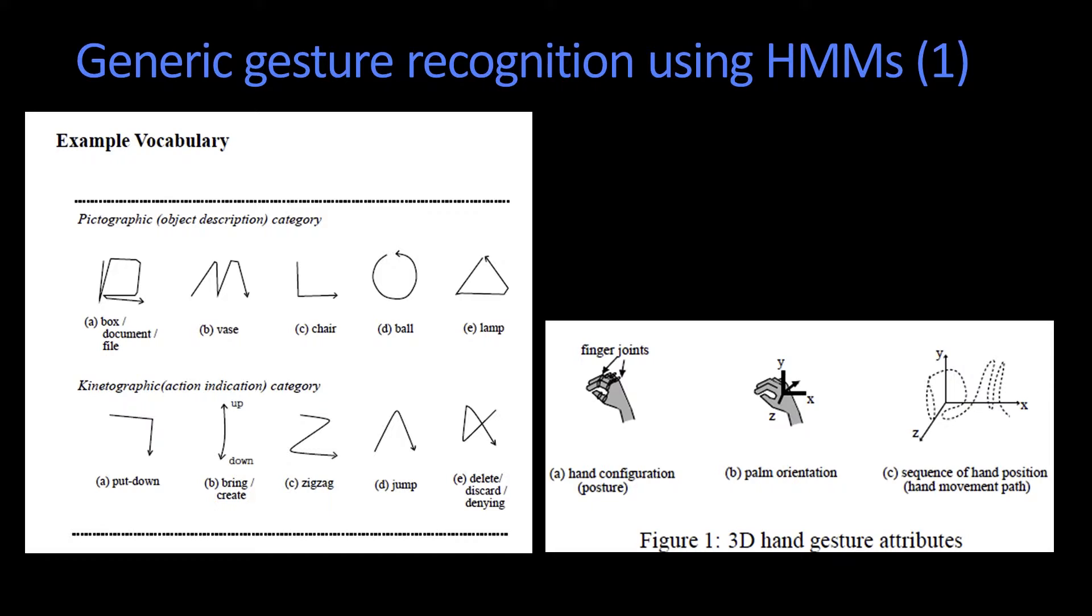What was kind of cool about their system was they had a bunch of different gestures that they wanted to indicate, like nouns: chairs, vase, lamp, ball, because of course that's a natural vocabulary. And then you want to do things like put it down or bring it or discard or jump. I don't even know why that was a particular verb that they wanted to use. But the idea was that there was a fixed vocabulary.